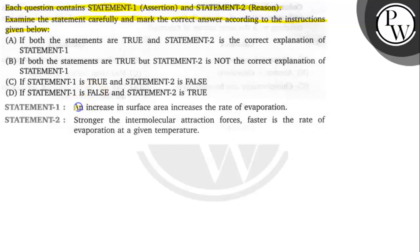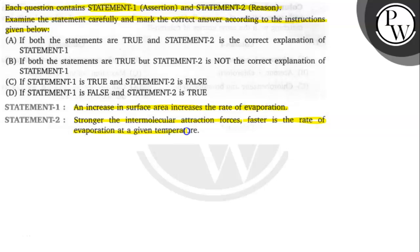Statement 1 says that an increase in surface area increases the rate of evaporation. Statement 2 says that stronger the intermolecular attraction forces, faster is the rate of evaporation at a given temperature.